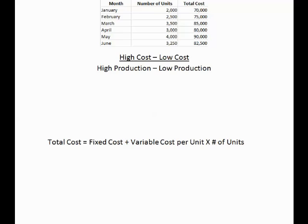We have a list of time periods, in this case months, and the number of units that we produced and the cost for that month and that number of units. Here we have six months of production. The first thing we do is find the high cost. If we look here, the highest is at 4,000 units or $90,000.